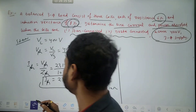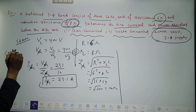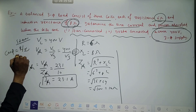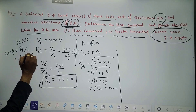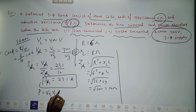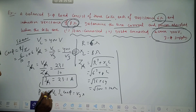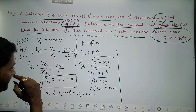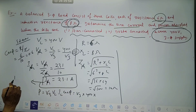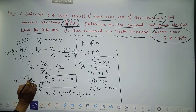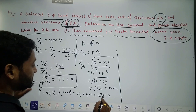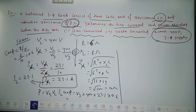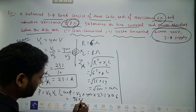Now we find power. Cos phi is R by Z — R is 6 and Z is 10 — so cos phi is 0.6. Power formula is root 3 times VL times IL times cos phi. Root 3 is 1.71, VL is 400, and in a star connected circuit IL equals phase current which is 23.1 amperes. Multiply everything and power is coming approximately 9,602.5 watts.